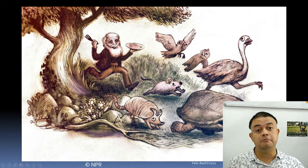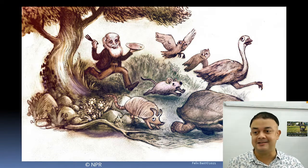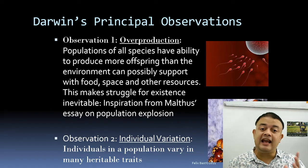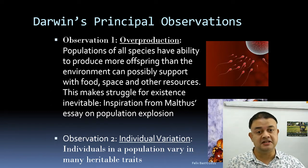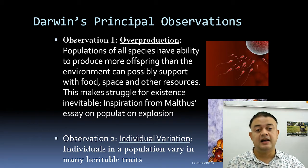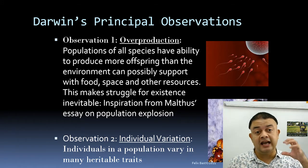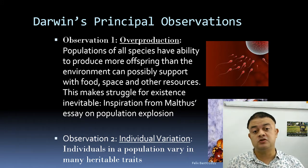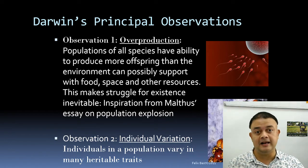Darwin even ate birds like the rhea — a big ostrich-like bird. So he was very thorough in his field work. Now, what did he actually observe? There are mainly two key observations. The first is overproduction: individuals of every species have an ability to produce more offspring than the environment can possibly support with food, space, and other resources.